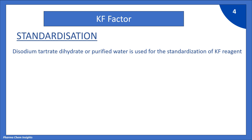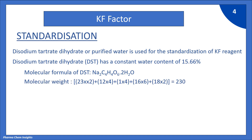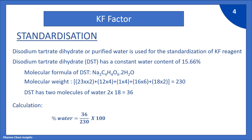Disodium tartarate dihydrate is used for the standardization of KF reagent. You can also use purified water for standardization. DST has a constant water content of 15.66%. The molecular formula of DST is Na2C4H4O6·2H2O. Molecular weight is (23×2) + (12×4) + (4×1) + (6×16) + (2×18) = 230. DST has 2 molecules of water: 2×18 = 36. So, percentage water in DST = 36 ÷ 230 × 100 = 15.66%.